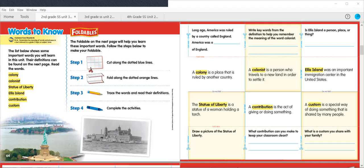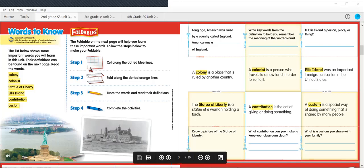Next, we have Ellis Island. Ellis Island was an important immigration center in the United States. Is Ellis Island a person, place, or thing? Go ahead and decide which one it is and write that down on the line. The next vocabulary word is Statue of Liberty. The Statue of Liberty is a statue of a woman holding a torch. Draw a picture of the Statue of Liberty. You're going to draw it in the box right underneath.